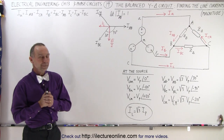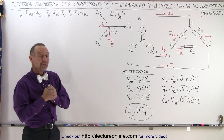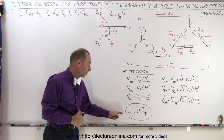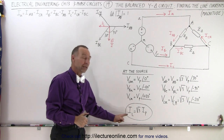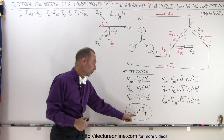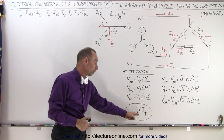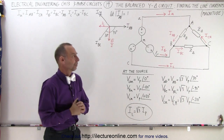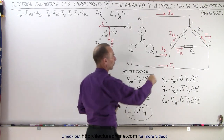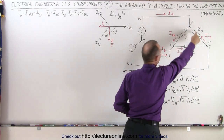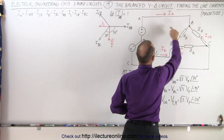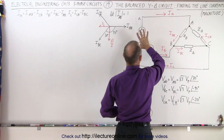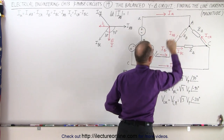Welcome to our lecture online. In a previous video, I made the assertion that the magnitude of the line current was equal to the square root of 3 times the magnitude of the phase current. The phase currents are the currents through the loads, and the line current is the current that feeds from the source to the load.